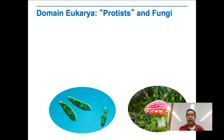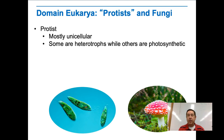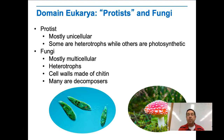In the eukaryote domain, you have several groups. Protists are kind of a catch-all group: if it's a eukaryote and it's not a plant, not an animal, not a fungus, it ends up in the protist kingdom, making it a very diverse kingdom. Protists are mostly unicellular, though there are some multicellular ones like kelp. Some are heterotrophs; others are photosynthetic.